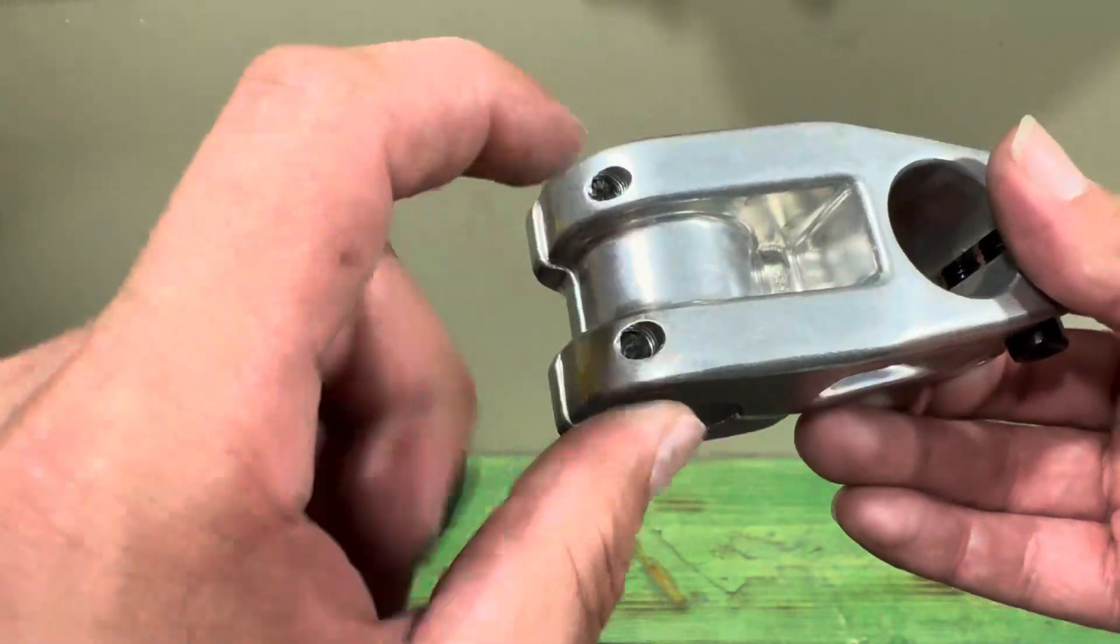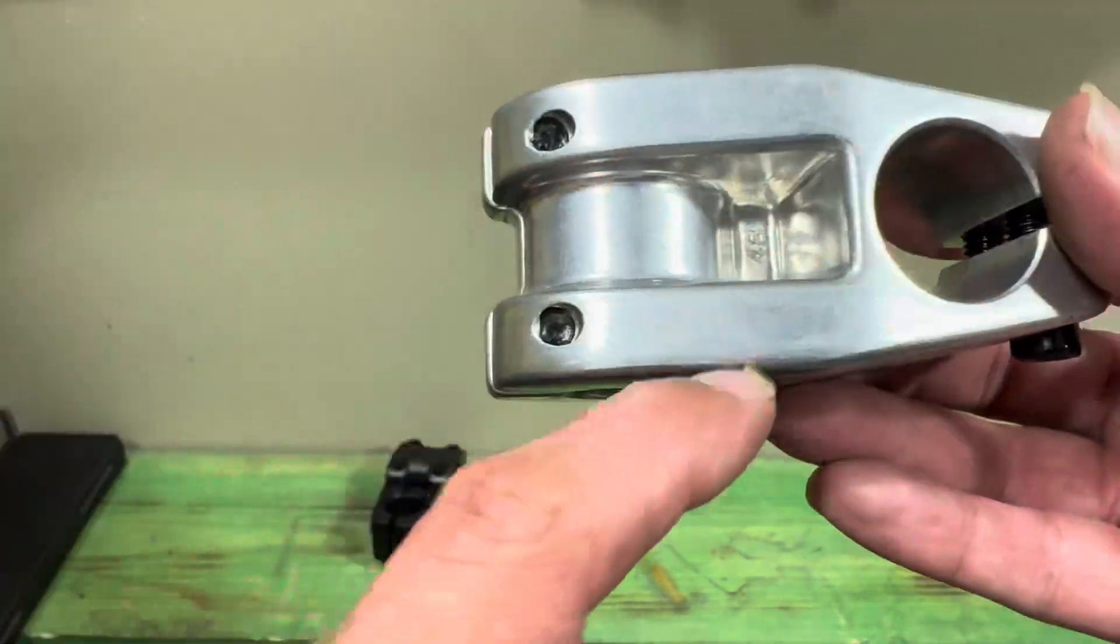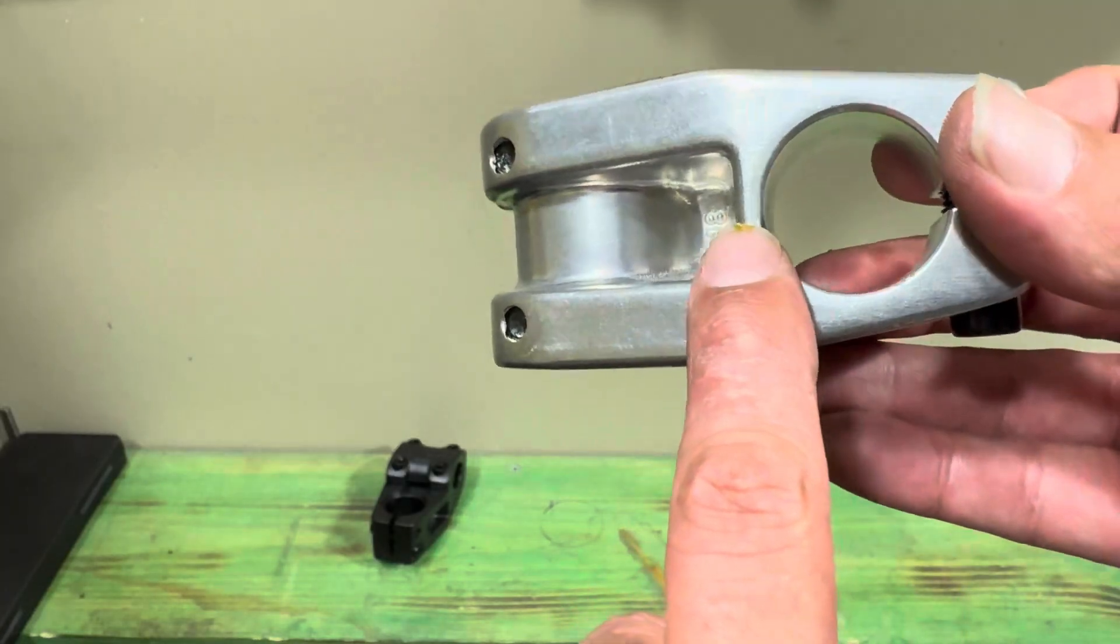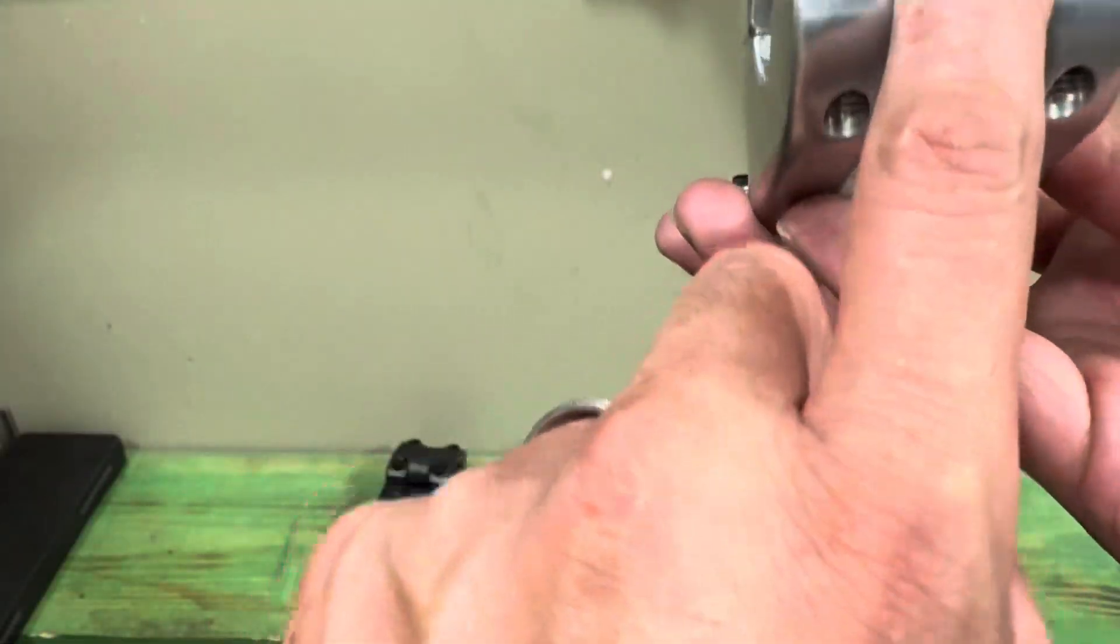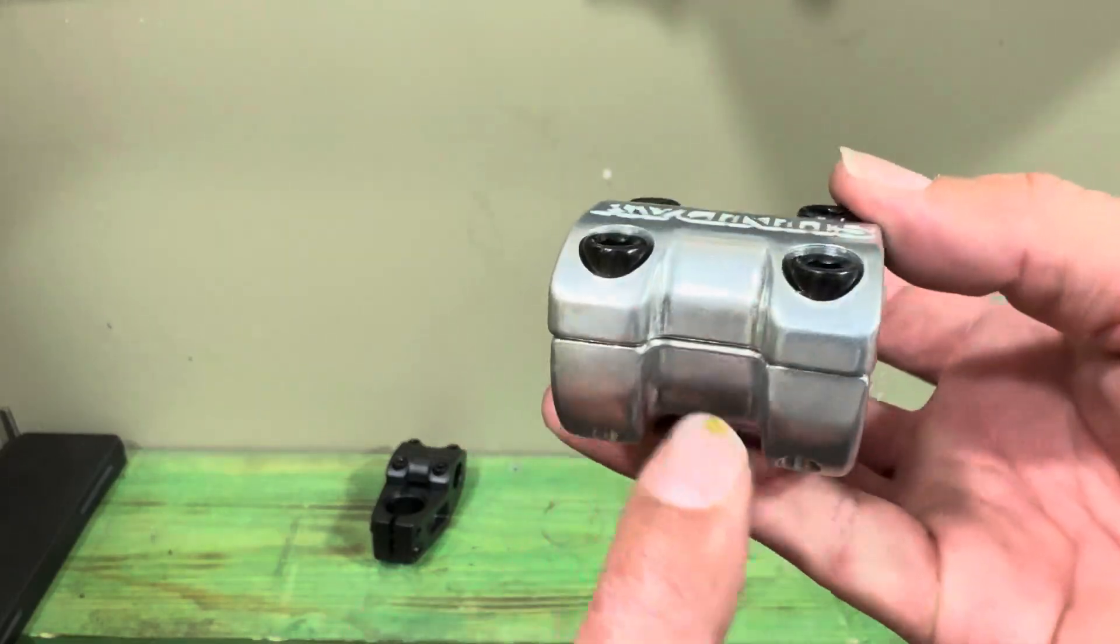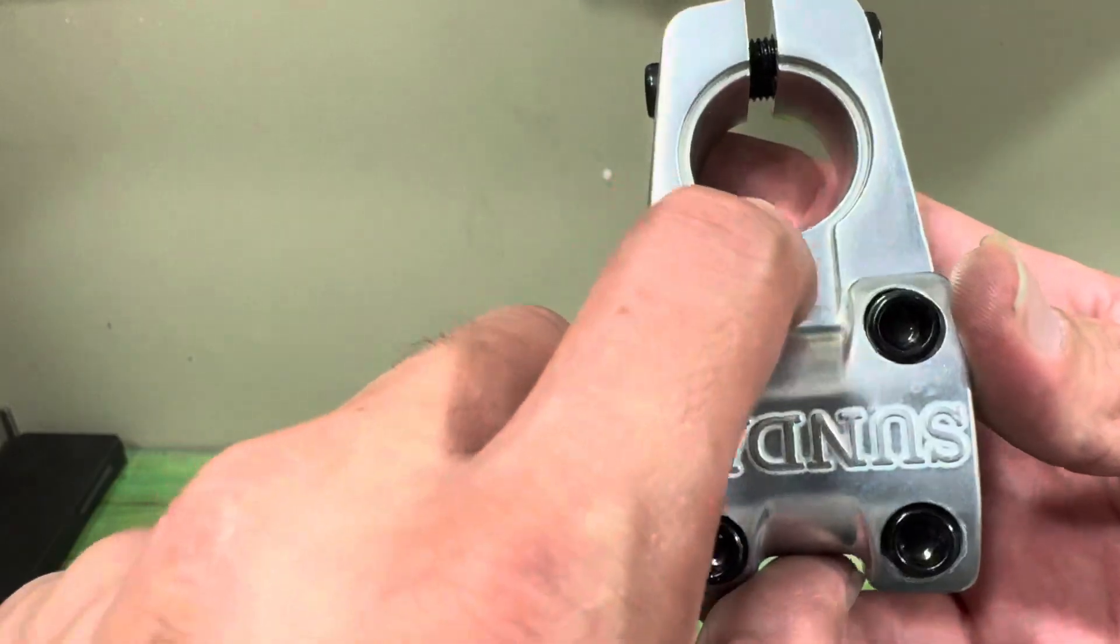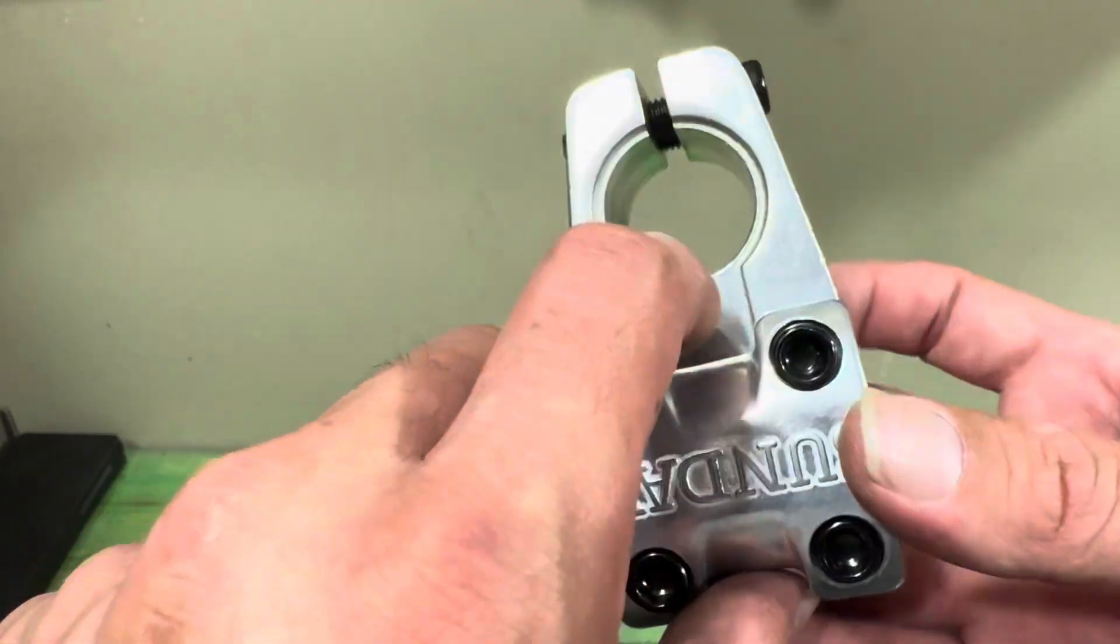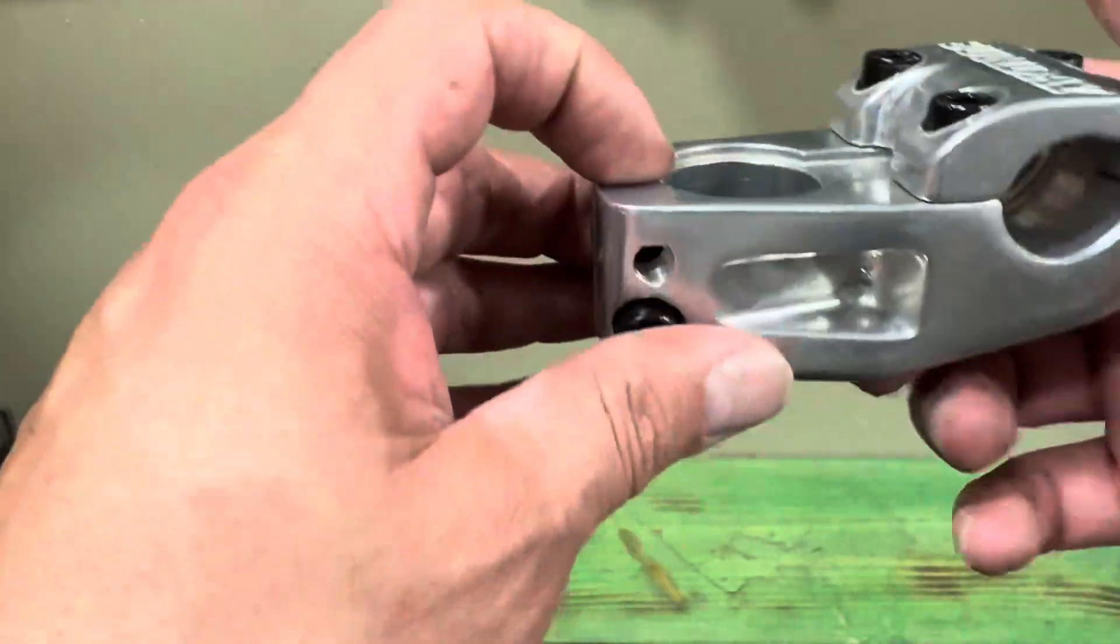I notice it does have a huge cutout right here, so look how thin that is right there, how deep that is. Look at this front, it's machined out quite a bit, or not even machined out, it's just got a big notch right there as well. At the top it continues to the actual base of the stem, and then it also has a recess cap.